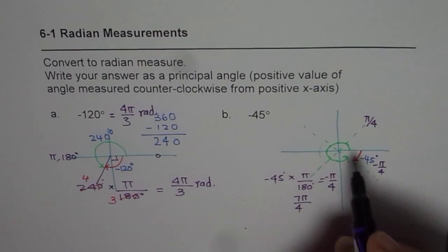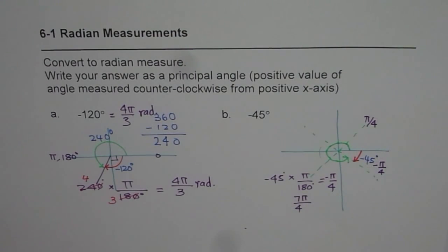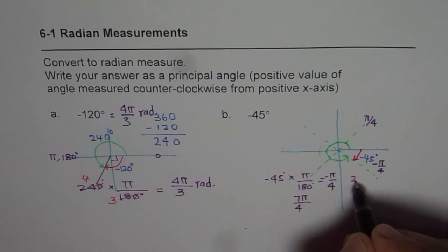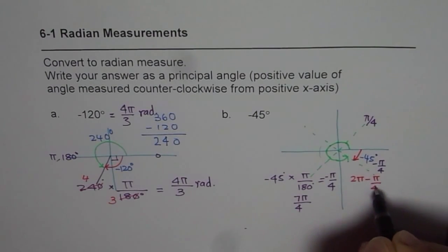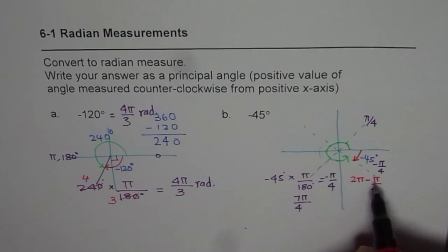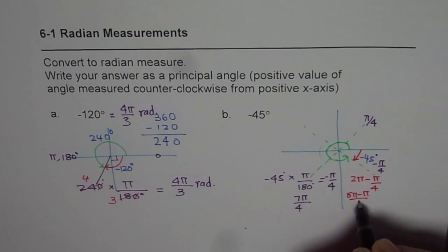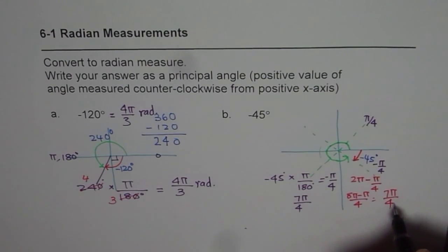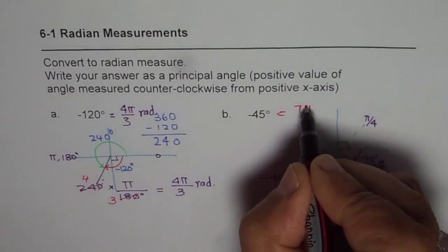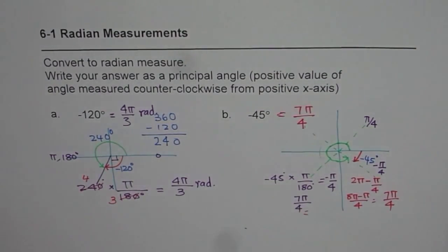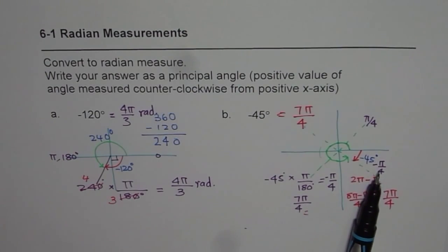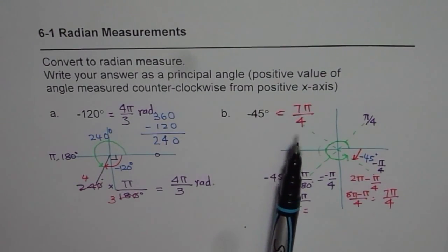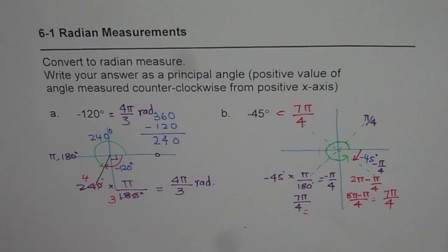An alternate way: we know the total angle is 2π, so we do 2π minus π/4, which gives us 8π/4 minus π/4, which is 7π/4. Either way you get the same answer. So minus 45 degrees can be written as minus π/4, but the principal angle is 7π/4. I hope you find these methods simple and useful. Thank you and all the best.